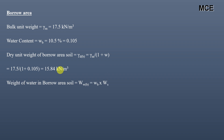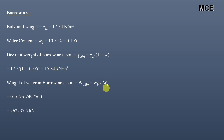The weight of water in the borrow area soil equals the water content of the borrow area soil multiplied by the weight of the soil solids: 0.105 × 24,975,000 = 2,622,375 kN.